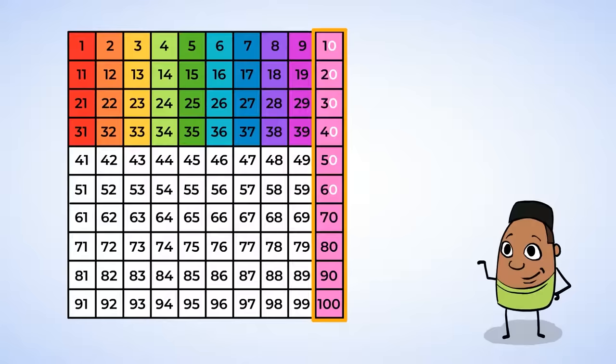50, 60, 70, 80, 90, 100. Okay, these numbers all have zeros at the end, and knowing their names will help with the rest of our counting.